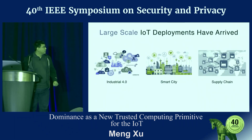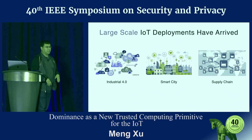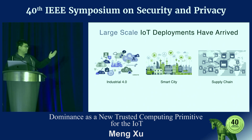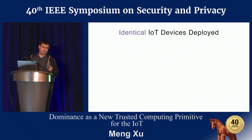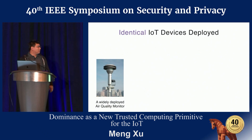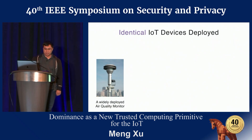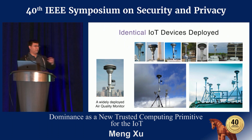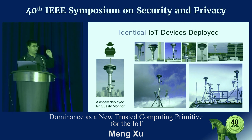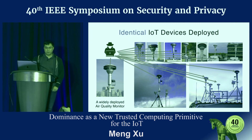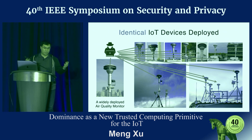We know that large-scale IoT deployment has arrived with Industry 4.0, smart cities, and supply chains. They have identical IoT devices deployed across many places. For example, this already-deployed air quality monitor is deployed everywhere — you can find the same identical devices around the world. But once an attacker compromises a single device, they can compromise everything, because the devices are identical and share the same vulnerabilities and bugs.